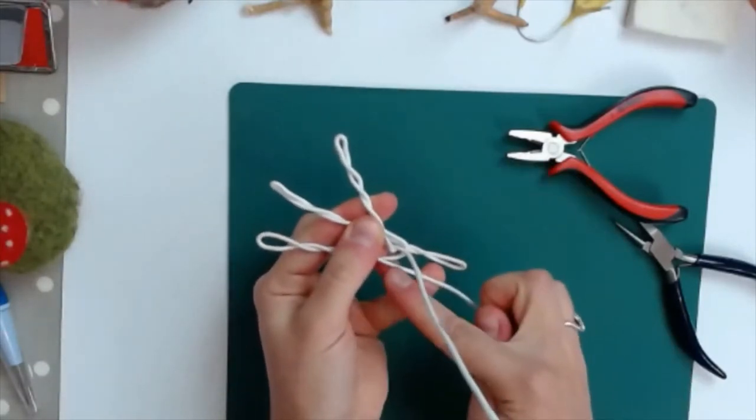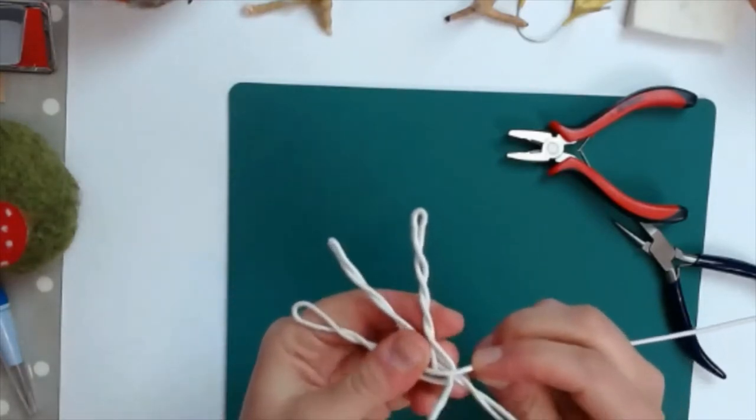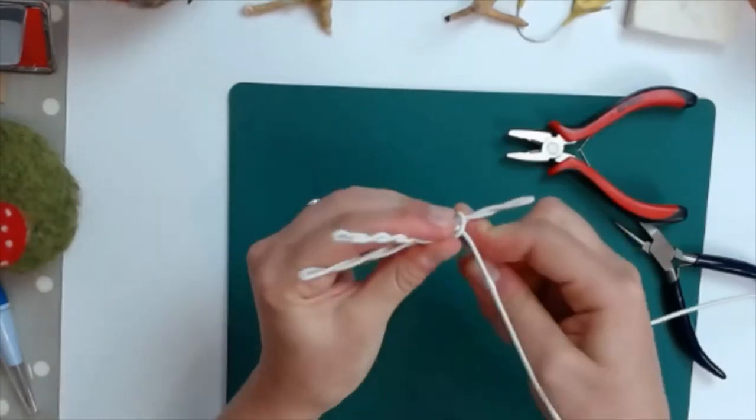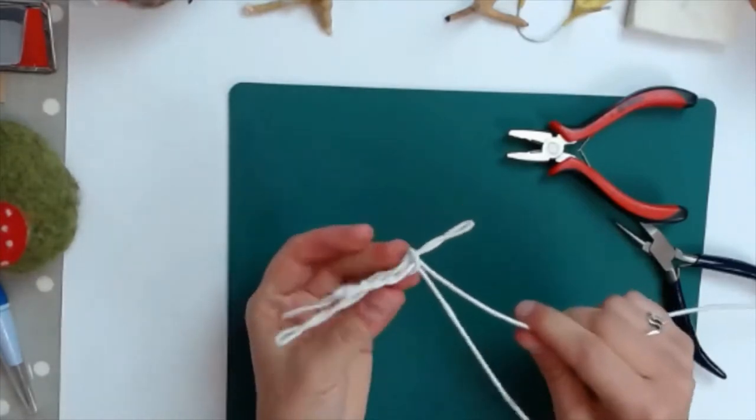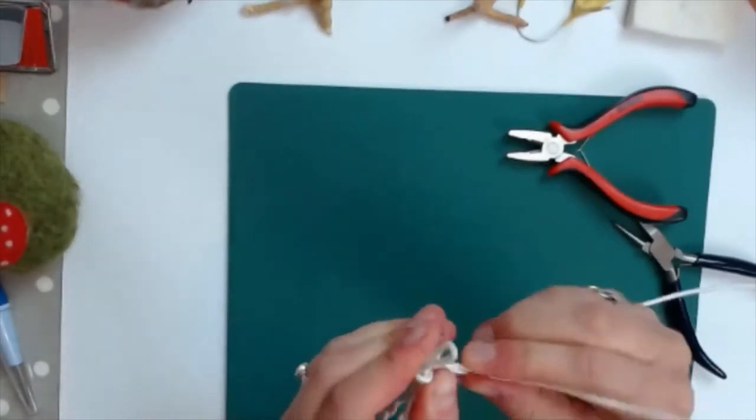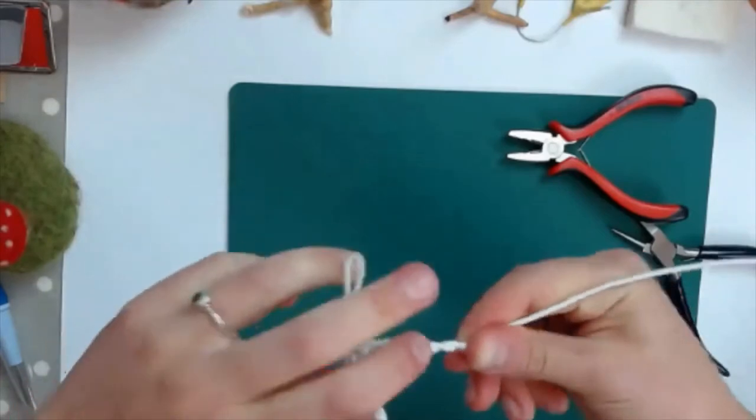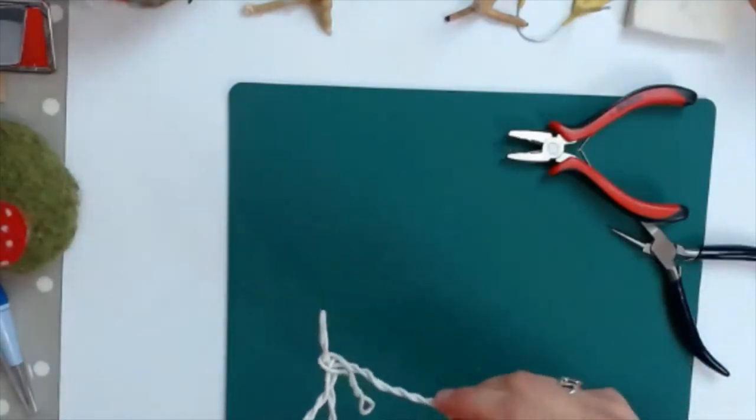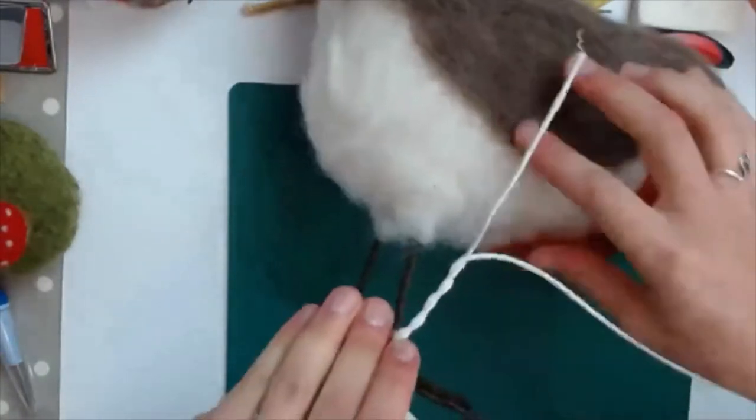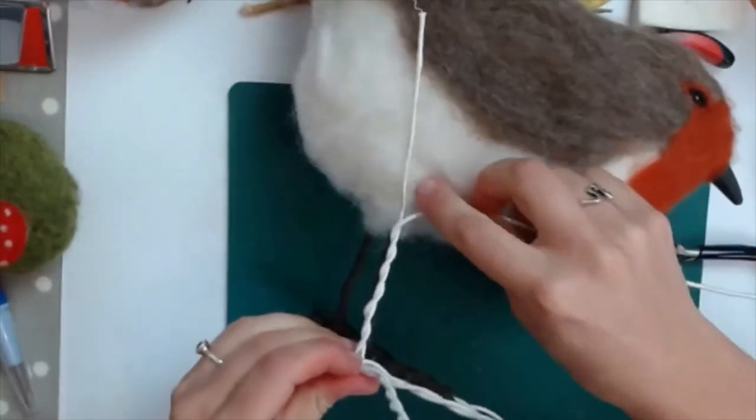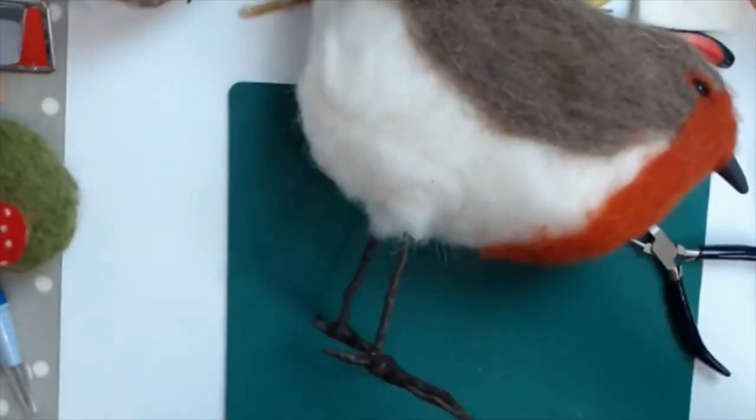So there we go, I've twisted that toe. And now because I came behind the ankle last time, I'm going to go in front of the ankle this time, and then I'm going to go underneath the foot. So that's going to help to make all that foot really nice and solid now. So going under the foot, and then I'm going to come up the leg, and I'm going to twist the wires together up the leg.